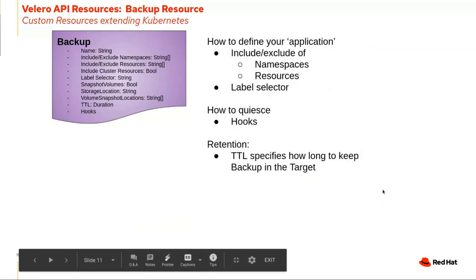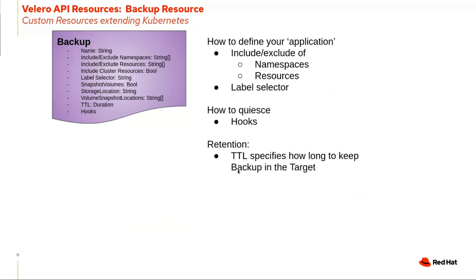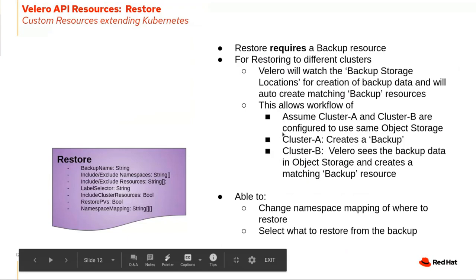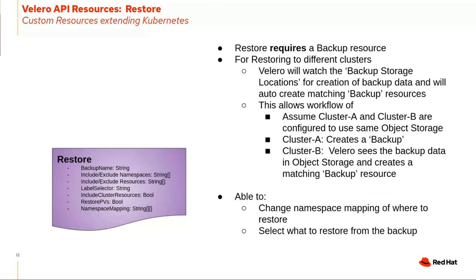The fifth resource is the schedule — the ability to schedule backups on a timely basis, using a cron-job-like syntax, such as every three hours or every 24 hours. For advanced scheduling, backup vendors have more fine-grained capabilities. You can also provide a namespace mapping on restore — for example, restoring to a testing namespace to verify your backups are working before committing to production.